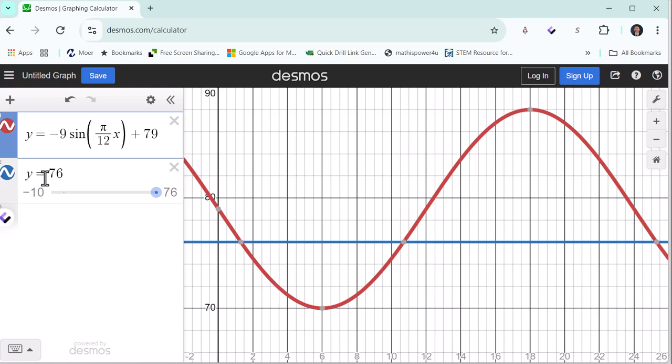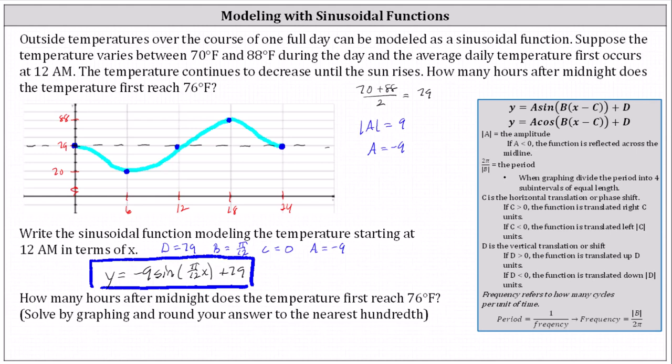And now we need to find the first point of intersection from x equals 0 to x equals 24, which is this point here to two decimal places. Notice we round up and therefore x is approximately 1.30. Notice the temperature also reaches 76 degrees at approximately 10.70 hours after 12 a.m. But we're only told to give the first time at which the temperature reaches 76 degrees Fahrenheit. So again our answer is x is approximately 1.30. The temperature first reaches 76 degrees Fahrenheit at approximately 1.30 hours after midnight.